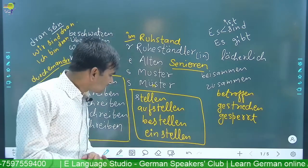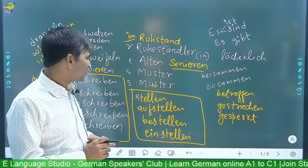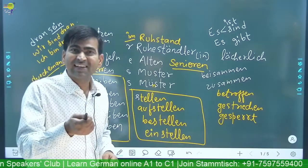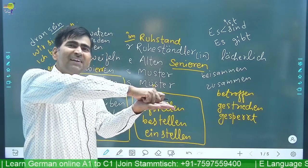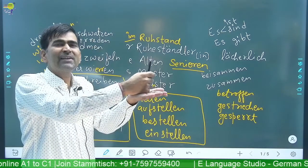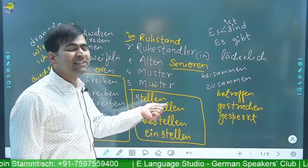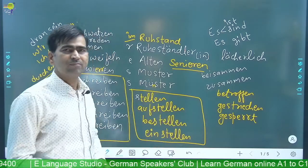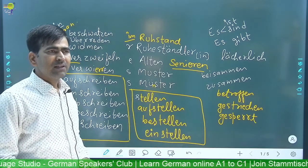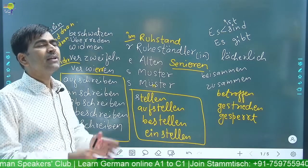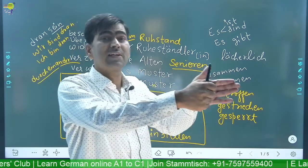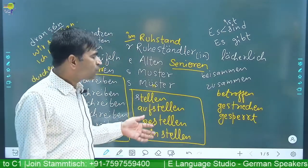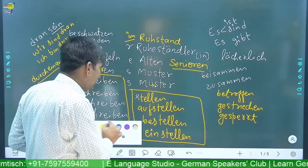Diese Wörter — vielleicht haben Sie schon die Ahnung. Stellen bedeutet — stellen und legen. Legen: to put something horizontal. Stellen: to put something vertical. So this is stellen — stellen Sie bitte hier das Glas hin. Stellen ka matlab hai: banda khadi rakh raha hai — book ko khadi rakhna.